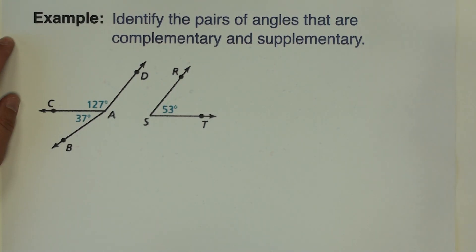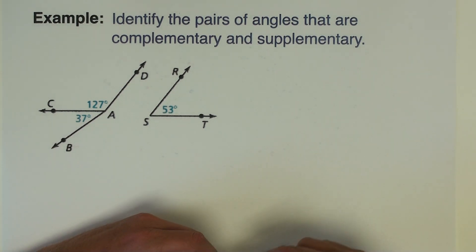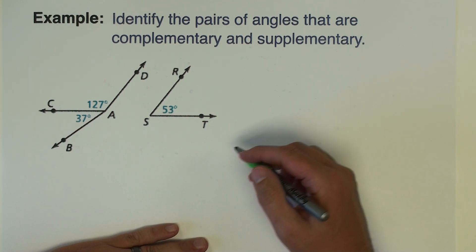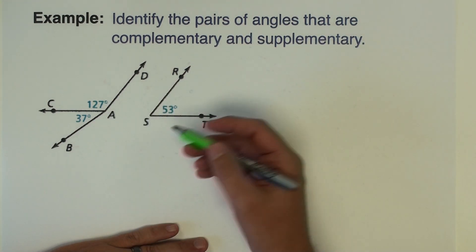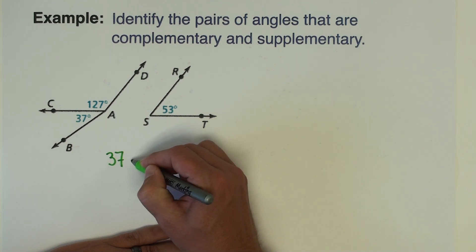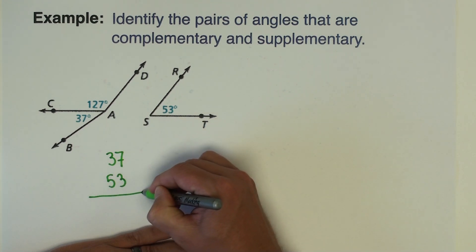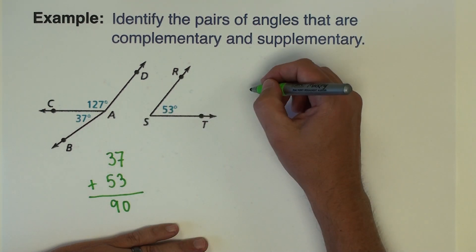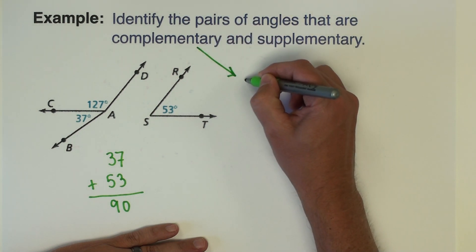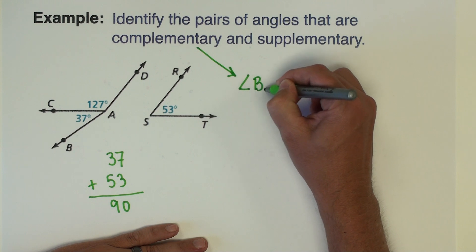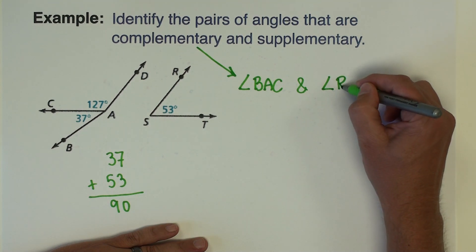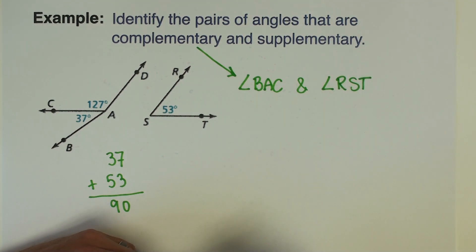The directions in this first example problem are to identify the pairs of angles that are complementary and supplementary. Complementary angles have to add to 90, and when I look at these three numbers, 37 and 53 add to 90. So the complementary angles are angle BAC and angle RST. Those two angles are complementary because their measurements add to 90.